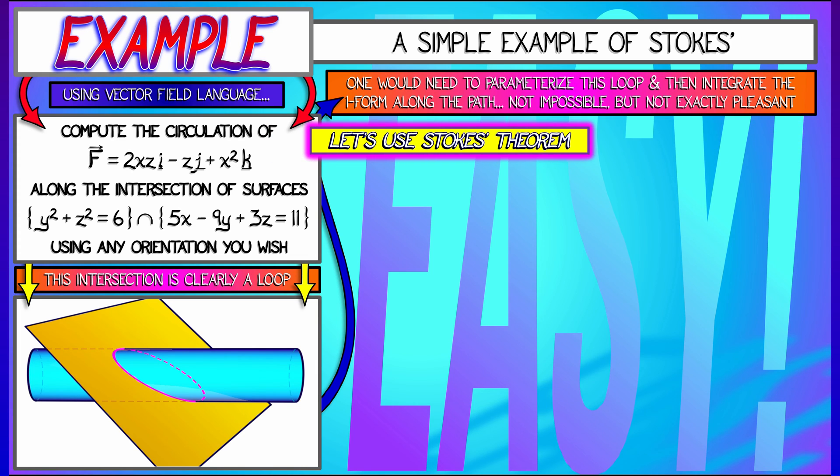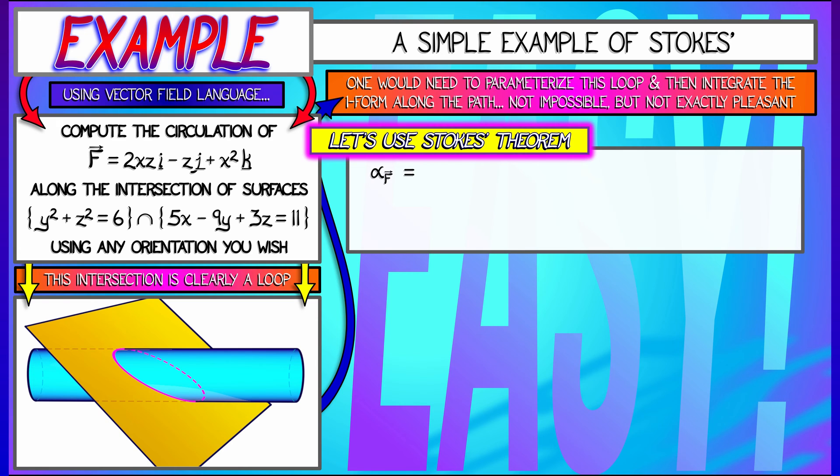So let's use Stokes' theorem instead. Let's take the work 1-form associated to f, 2xz dx minus z dy plus x squared dz, and let's differentiate that.